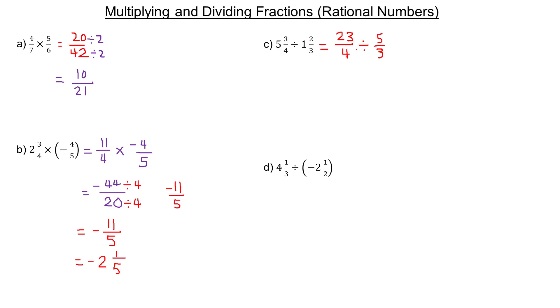We keep 23/4 the same. Dividing by 5/3 is the same as multiplying by the reciprocal—the second fraction flipped upside down. So we change dividing by 5/3 into multiplying by 3/5. Then it's the same as the multiplication we did in A and B.